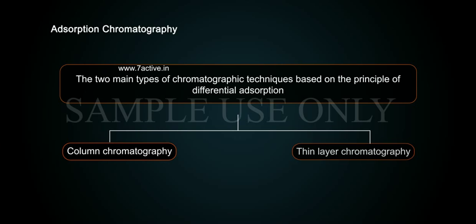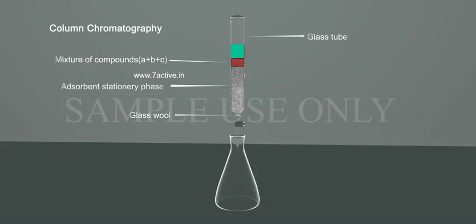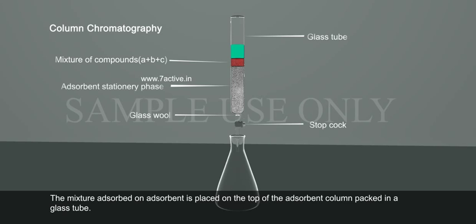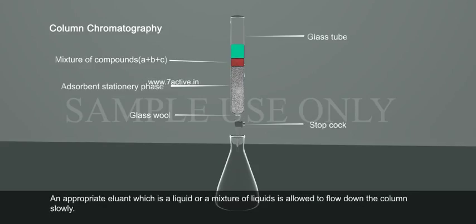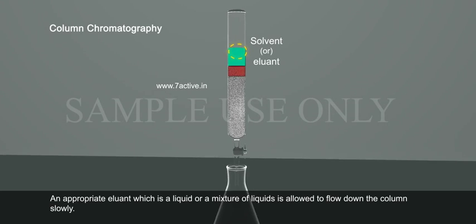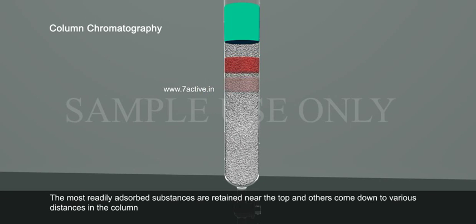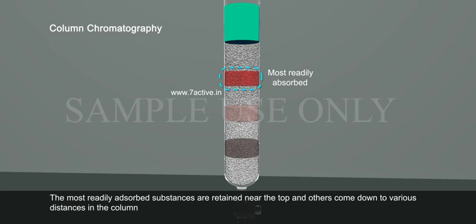The two main types based on the principle of differential adsorption are: A. Column Chromatography and B. Thin Layer Chromatography. Column Chromatography involves separation of a mixture over a column of adsorbent stationary phase packed in a glass tube. The column is fitted with a stopcock at its lower end. The mixture adsorbed on adsorbent is placed on the top of the column. An appropriate eluant, which is a liquid or mixture of liquids, is allowed to flow down the column slowly. Depending upon the degree to which the compounds are adsorbed, complete separation takes place. The most readily adsorbed substances are retained near the top and others come down to various distances in the column.